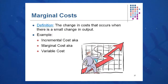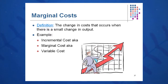Marginal cost — you may hear that terminology used by accountants, financial analysts, and economists. Here we're talking about the cost of one more unit, the small change in output, sometimes called incremental cost, marginal cost, or variable cost. A lot of times these terms are used interchangeably, so don't be confused by them.